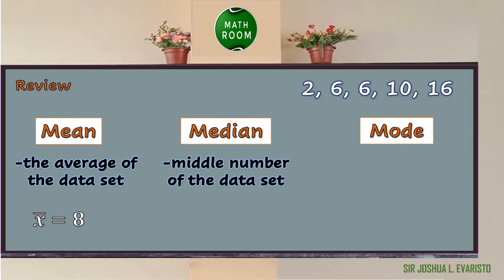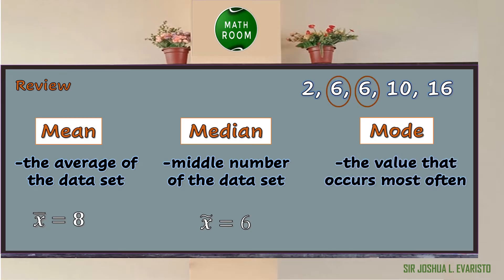The sum is equal to 40. 40 divided by 5 is equal to 8, thus the mean is equal to 8. The median is the middle number of the data set. To find the median, simply list all the numbers in increasing or decreasing order and choose the middle one. In our example, the data set is arranged in increasing order and the middle number is 6, thus the median is 6. The mode is the value that occurs most often. In our example, 6 appears twice and the rest appear once, thus the mode is equal to 6.